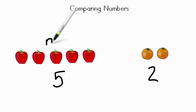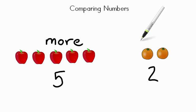So there are more apples, less oranges. Another way we can think of it is that the five apples are greater than the two oranges. There's more of them.